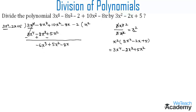The first term of the new dividend is minus 6x³. Let us divide it by the first term of the divisor, 3x². We get minus 6x³ divided by 3x². Simplifying: 3 goes into 6 twice giving minus 2, and x³ divided by x² gives x, so we get minus 2x as the second term of the quotient.